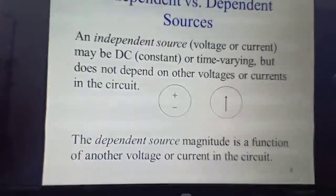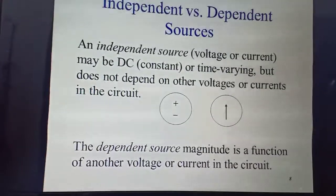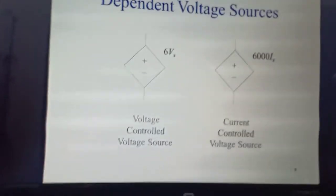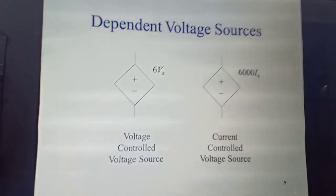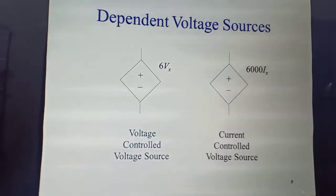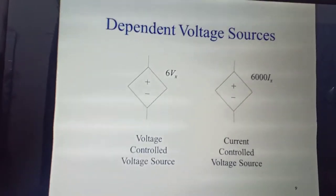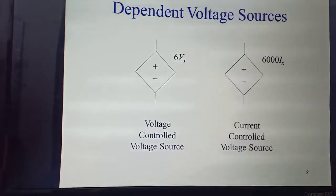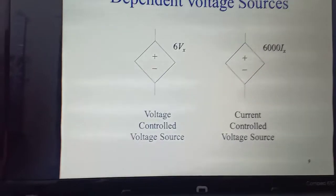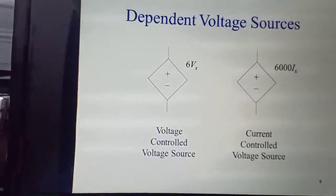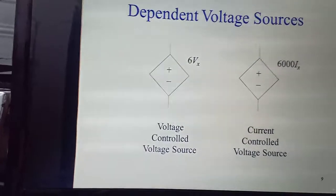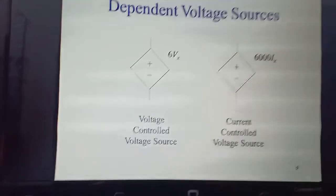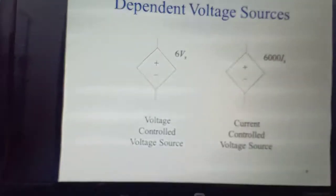The dependent source: its magnitude is a function of another voltage or current in the circuit. It depends on some other voltage source or current source. Dependent voltage sources are: voltage controlled voltage source and current controlled voltage source. These are both voltage sources. In the first diagram, 6 times voltage source means voltage depends on voltage source. In the second diagram, current depends on voltage source, 6000 times current.